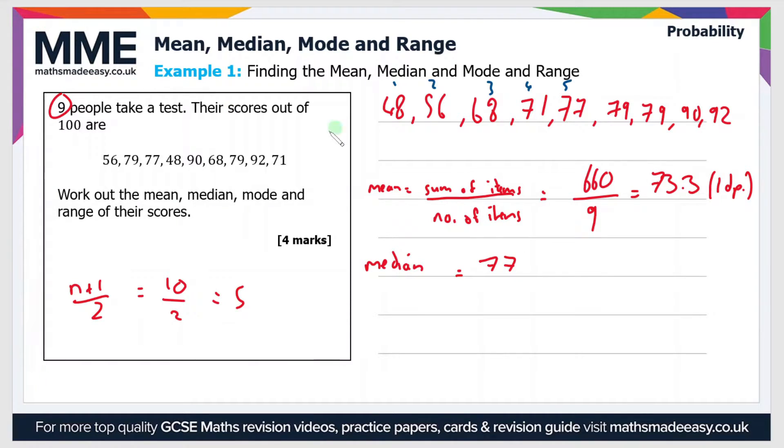So next let's look at the mode. Now the mode is just the most common value and as you can see there's only one value that appears twice and that's 79. So therefore the mode equals 79.